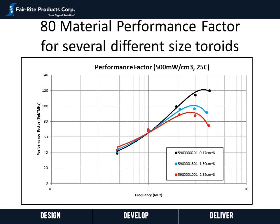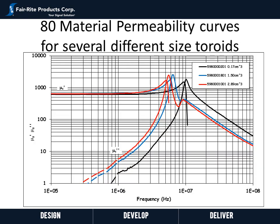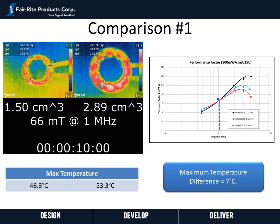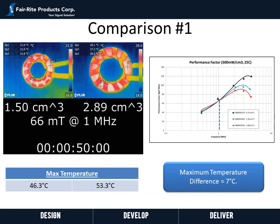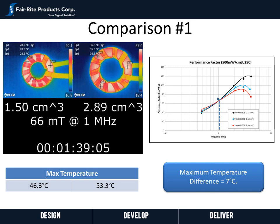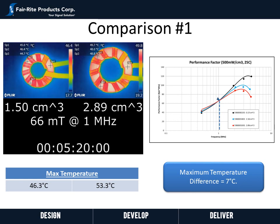This is an area we are continuing to do work on, but the point is that for larger and larger sizes you may not get the same performance as you would in a smaller core. For the same three toroids, we also looked at µ' and µ'' versus frequency. As expected, as the core size increases we see µ'' or losses shifting lower in frequency — so larger cores are lossier at higher frequencies than smaller cores. At 1 megahertz we compared two different size cores of 1.5 and 2.89 cubic centimeters, ran them both at 66 milli Tesla, and compared the temperatures after stabilizing. The cores were within about seven degrees Celsius of each other — very close.